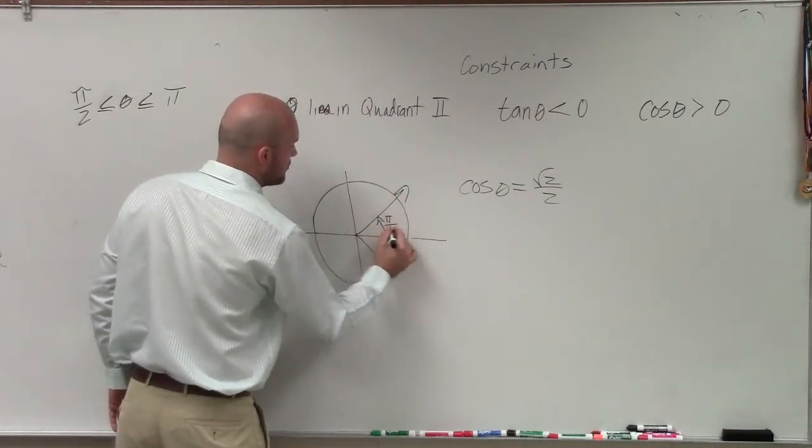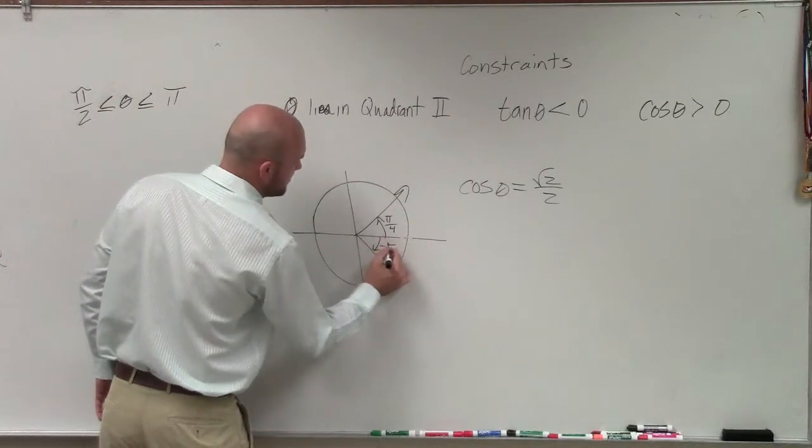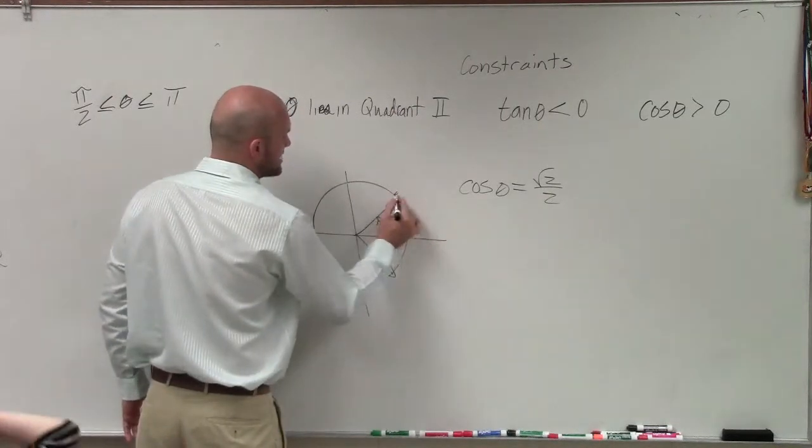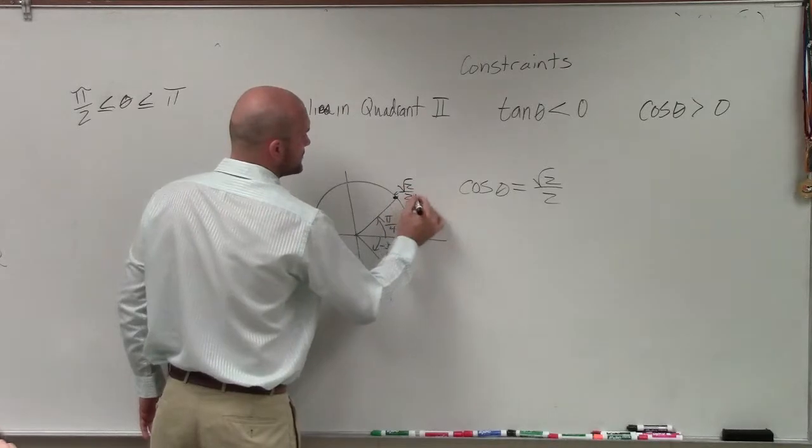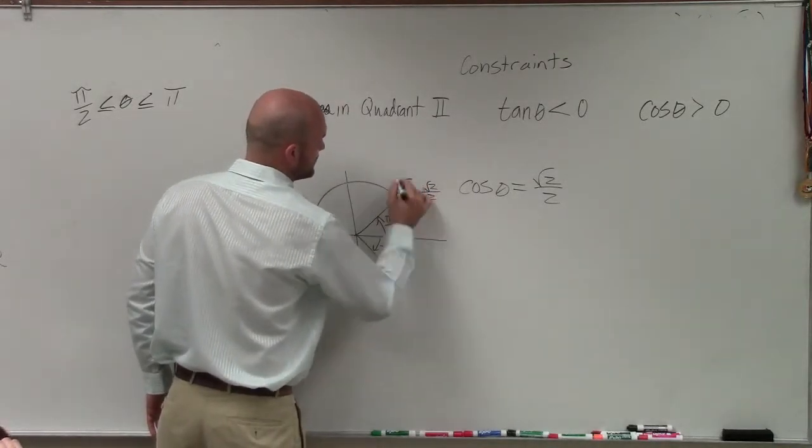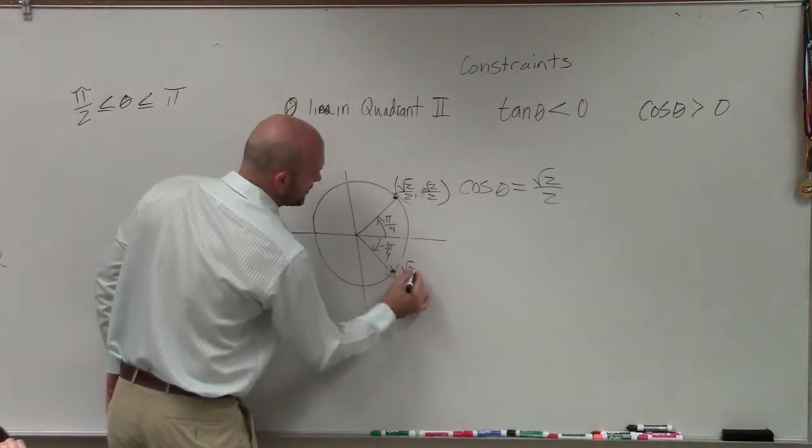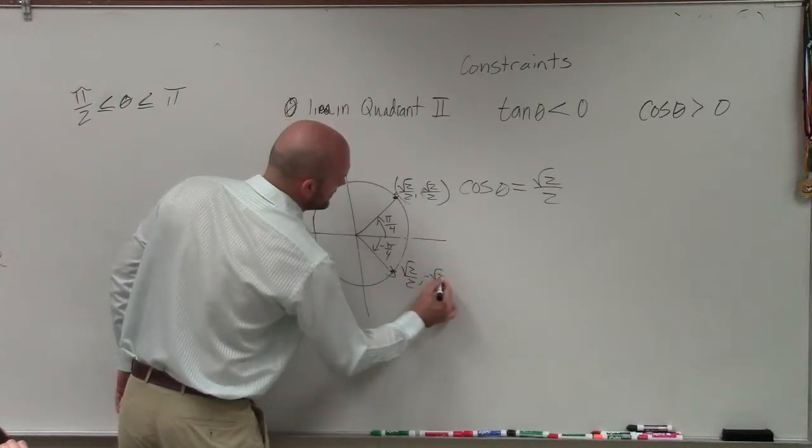So we have pi over 4 and negative pi over 4. Because at this point it's square root of 2 over 2, comma positive square root of 2 over 2. Here the point is square root of 2 over 2, comma negative square root of 2 over 2.